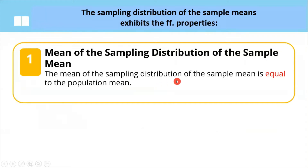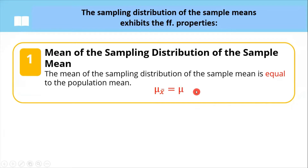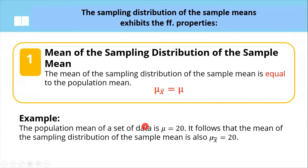Now let's proceed to the properties of the sampling distribution of the sample means. The mean of the sampling distribution of the sample mean is equal to the population mean, denoted by mu sub x-bar. So for example, if we have a population mean of 20, it follows that the mean of the sampling distribution of the sample mean is also 20, based on the first property.